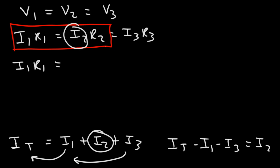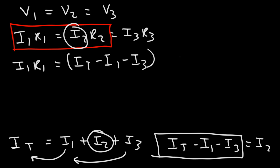So let's replace I2 with what we see here. So IT minus I1 minus I3 times R2. So we're going to ignore the third side of the equation.